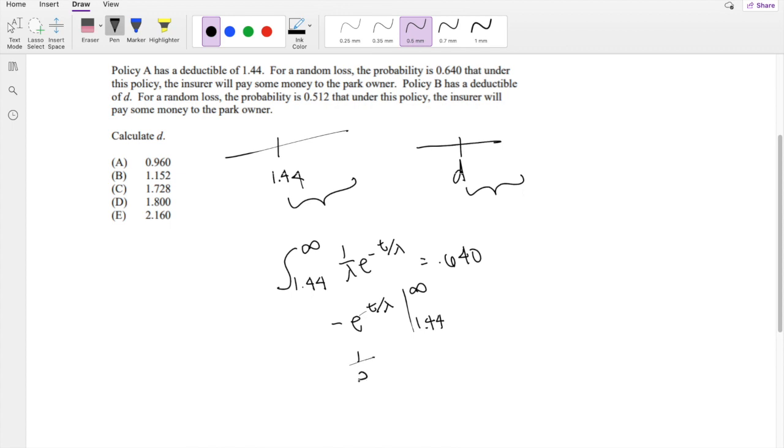Think of it like this, 1 over e to the big number. That's just equal to 0. So 0 minus minus, so that's positive. e to the negative 1.44 over lambda is equal to 0.640.